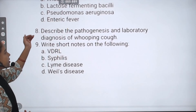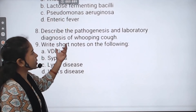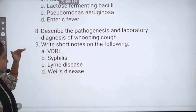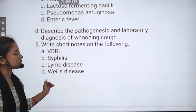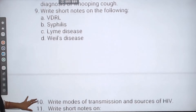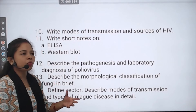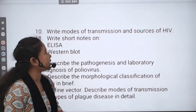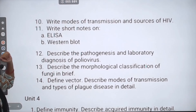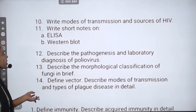Write short notes on the following: VDRL test, syphilis, Lyme disease, and Weil-Felix test. These are all short note topics in microbiology. Next question: Write the modes of transmission and sources of HIV — what are the modes of transmission of HIV? Next, in short notes, write about ELISA and Western blot — these two important tests.